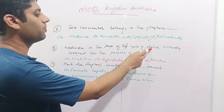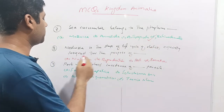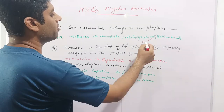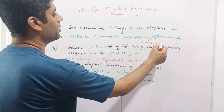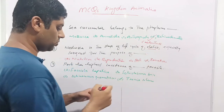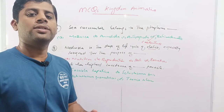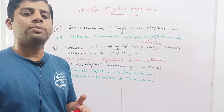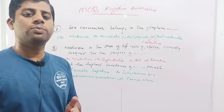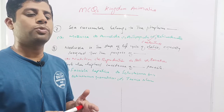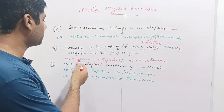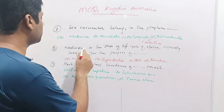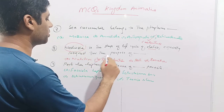Next question: the medusa stage in the life cycle of Obelia is specially designed for the purpose of what? Obelia is a member of phylum Coelenterata or Cnidaria. In cnidarians, there are two modes of life cycle: medusa and polyp. Medusa is the reproductive mode while polyp is the nutritive mode. Given options are nutrition, reproduction, both, or excretion. The medusa is specialized for reproduction, so that option is correct.